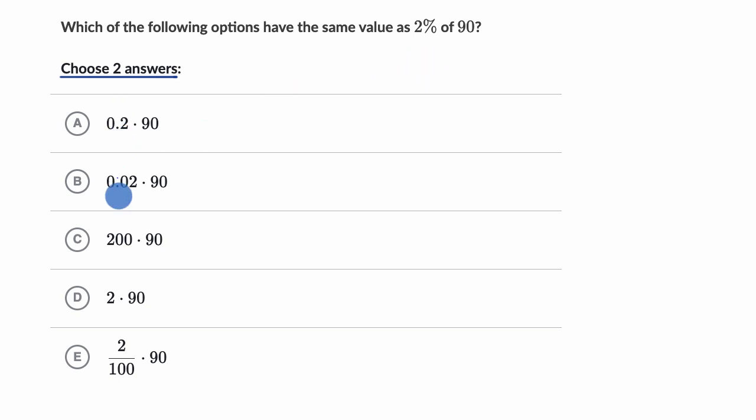Before I even look at the choices, I'm gonna try to think of all the ways that I can write 2% of 90. 2%, this right over here, literally means two per 100. So I could view it as the same thing as 2/100 times 90. That's one way to write 2% of 90.